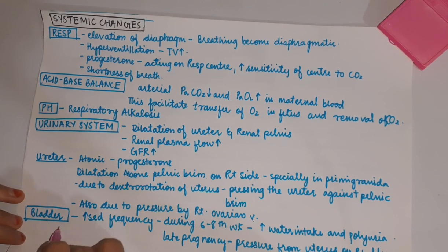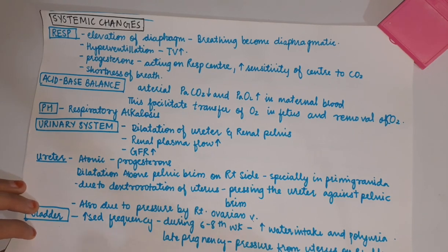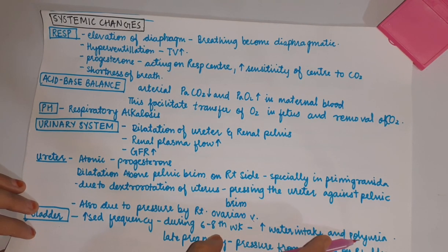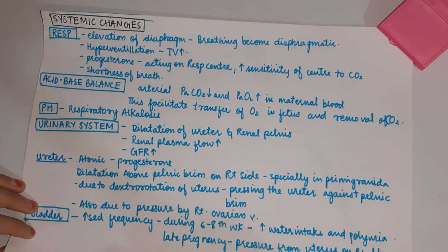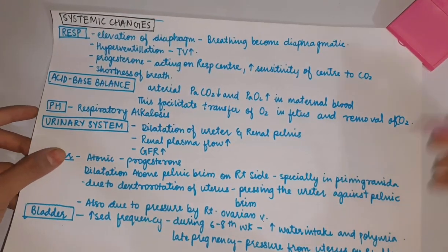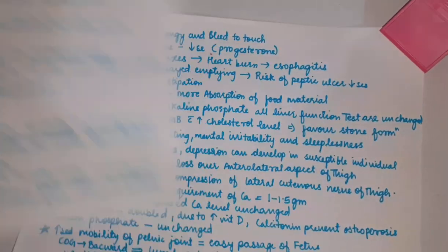Bladder: there is increased frequency during 6–8 weeks due to increased water intake and polyuria. In late pregnancy, there is increased pressure from the uterus on the bladder.